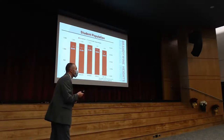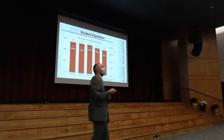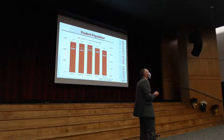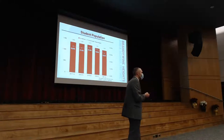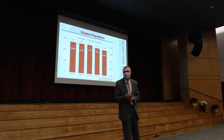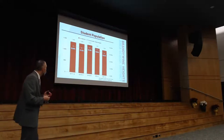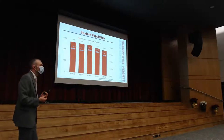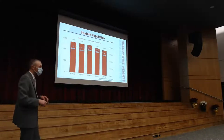Audience question: Is the poverty line based on household income? Yes — off the top of my head, it's around $56,000 for a family of four, but we can double-check. As for this year's poverty percentage, I'd estimate it will be around 34–35% once we account for the free lunch situation.